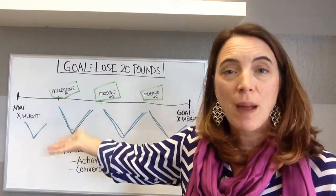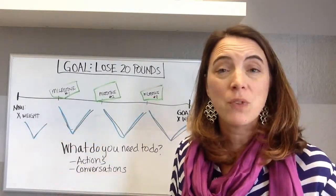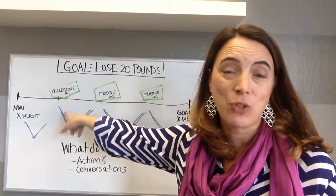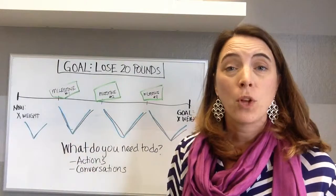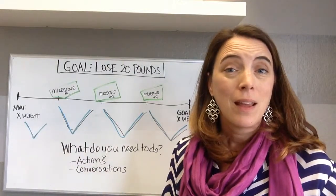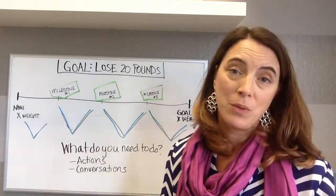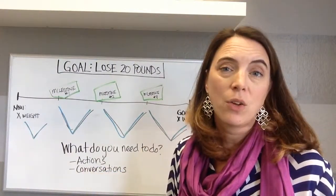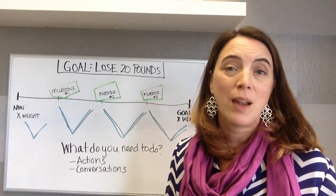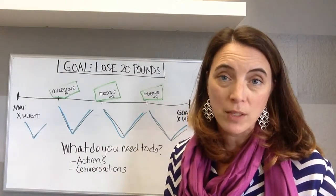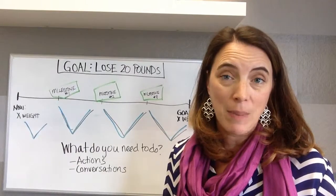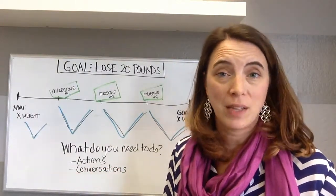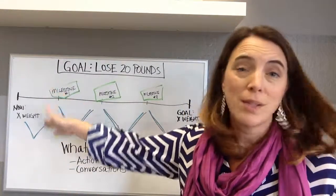Going back to the example — to lose five pounds by that first milestone, the actions could be planning your meals, prepping your meals, and grocery shopping. For conversations, it could be telling your family members what you're trying to do and asking for their support, enlisting an accountability buddy, or deciding how many times you're going to exercise that week. Just focus on what you need to do between now and the next milestone.